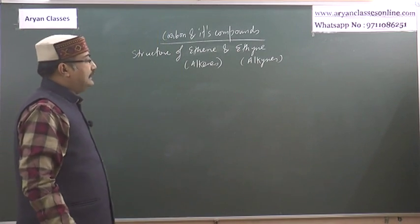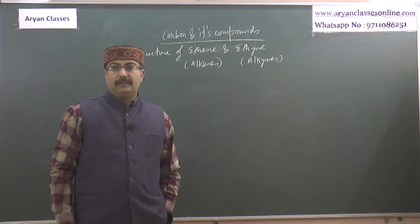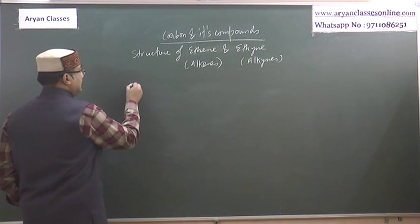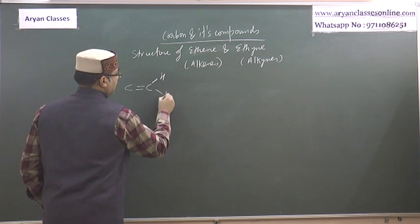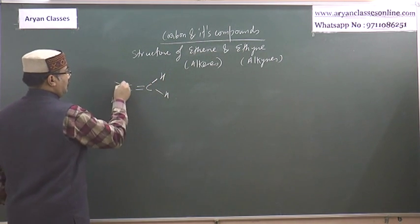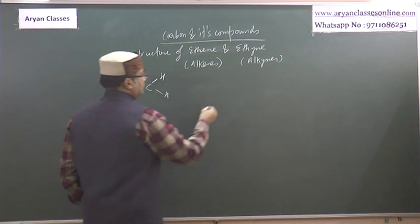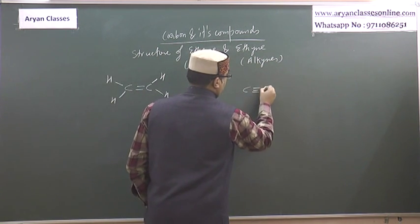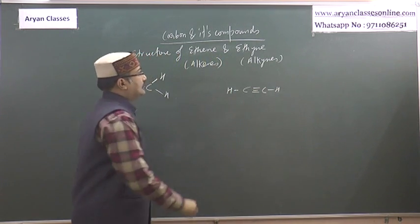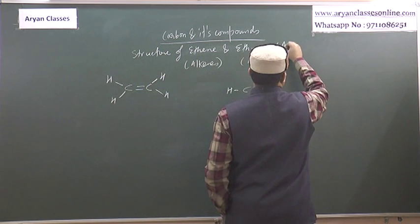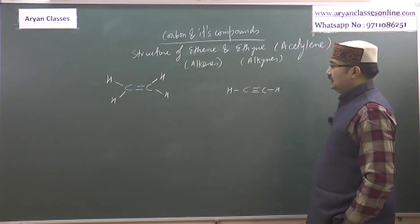Let us study about structures of ethene and ethyne. For alkenes or alkynes the basic structure - we have a triple bond for alkynes. We have the ethyne structure. Ethyne's common name is acetylene - it is also known as acetylene.